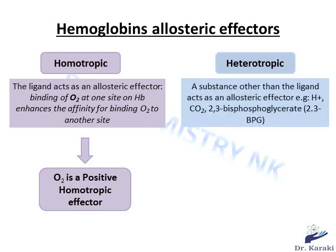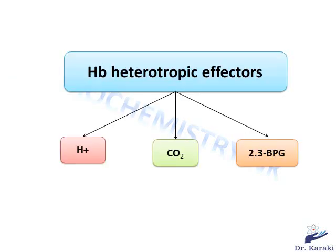Whereas when a substance other than the ligand acts as an allosteric effector — such as the proton, carbon dioxide, or a molecule called 2,3-bisphosphoglycerate — we call them heterotropic allosteric effectors. We will see how these effectors decrease the oxygen binding affinity of hemoglobin, and thus they will be considered negative heterotropic effectors. In the next slides, we will talk about how each of these heterotropic effectors affects hemoglobin's binding affinity for oxygen.